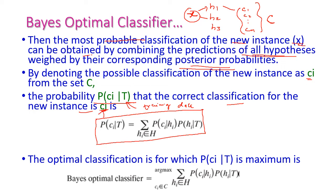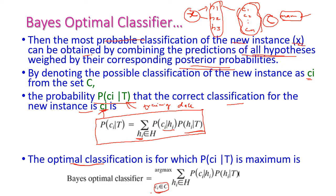P of Ci given T is equal to the summation over all hypotheses belonging to capital H — H1, H2, H3 — of P of Ci given Hi, multiplied by P of Hi given T. We need to identify the optimal classification, meaning X should be classified into the class for which this summation gives the maximum value. So the optimal classifier considers all classes Ci in C and all hypotheses Hi in H to find the maximum posterior probability value.